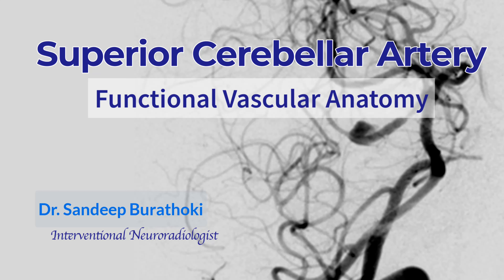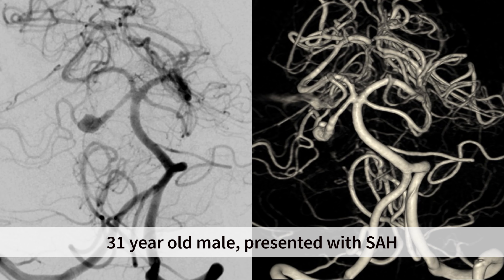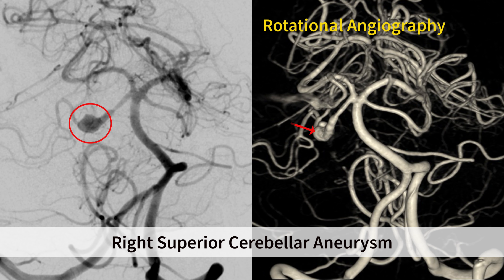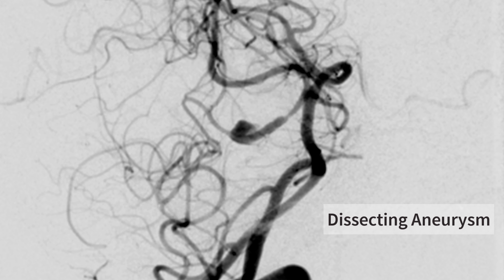In this video we will learn about the functional vascular anatomy of the superior cerebellar artery. We present the case of a 31-year-old male who presented with subarachnoid hemorrhage due to a ruptured right superior cerebellar artery aneurysm. This aneurysm is involving the lateral segment of the right superior cerebellar artery and appears to be a dissecting aneurysm.